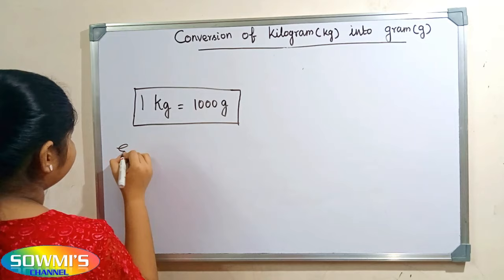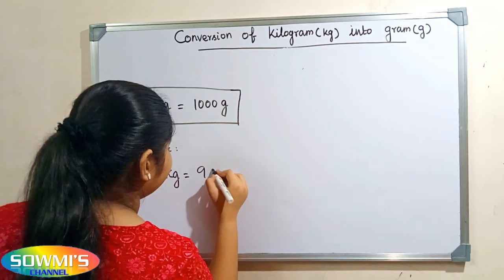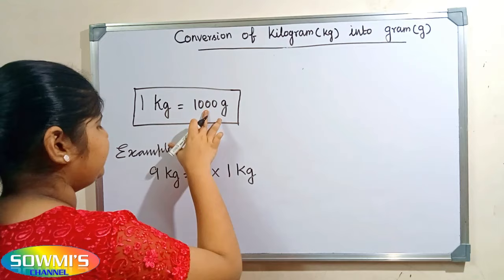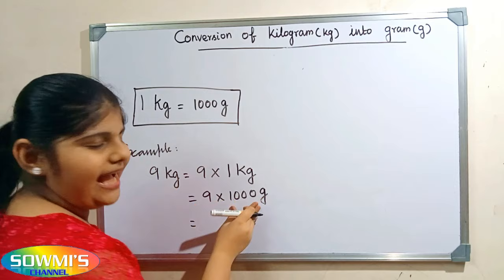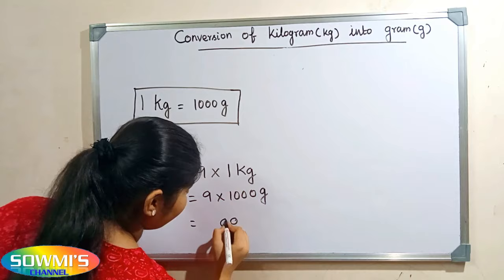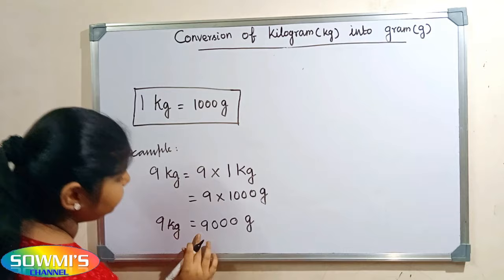For example, we can take nine kilograms. Nine kilogram can be written as nine multiplied by one kilogram. Now we substitute one thousand grams in the place of one kilogram, so nine multiplied by one thousand grams equals nine thousand grams. That is, nine kilogram is equal to nine thousand grams.